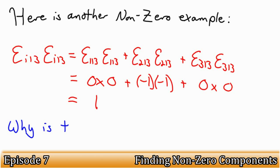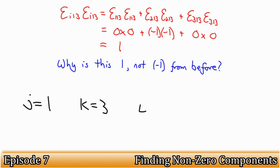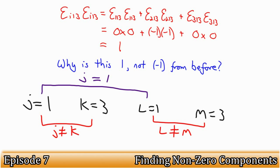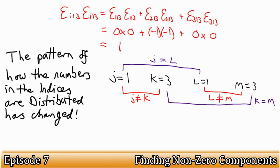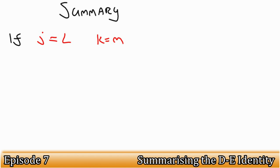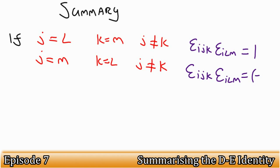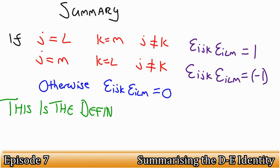But now the following question is raised. Why is this example 1, when the previous example is minus 1? Well, let's take a look at j, k, l, and m again. j is equal to 1, k is equal to 3, l is equal to 1, and m is equal to 3. The pattern of how the numbers are distributed has changed. From this, we can summarize that if j is equal to l, k is equal to m, and j is not equal to k, epsilon i j k epsilon i l m is equal to 1. And if j is equal to m, k is equal to l, and j is not equal to k, then epsilon i j k epsilon i l m is equal to minus 1. Otherwise, we have 0. And this is exactly the definition we have on the right-hand side of the identity.